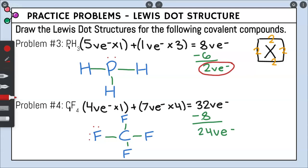We fill three sides of each of the four fluorines — six electrons per fluorine, times four fluorines — counting up to twenty-four total dots. That is your final answer for example number four.